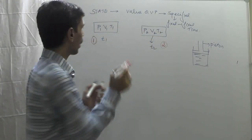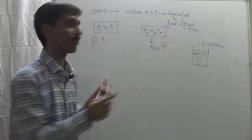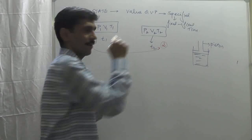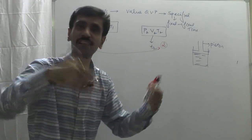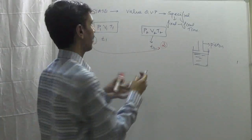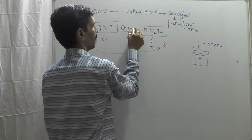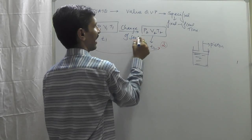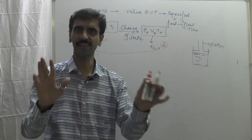Now compare state 1 and state 2. The values are different and the time is also different. So with a change in time, the values are changing — and this I call a change of state.